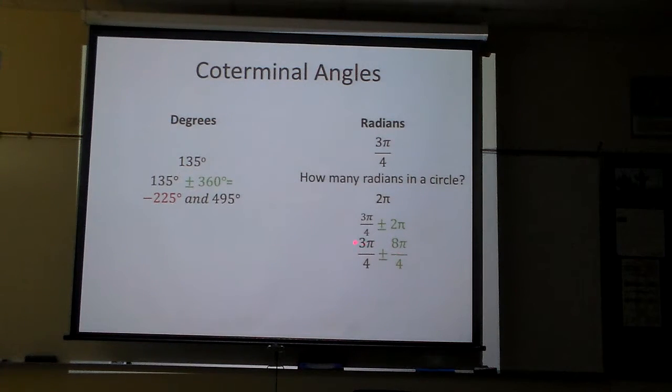Add 3 and 8 and take 3 minus 8. 3 minus 8 is negative 5π over 4. And 3 plus 8 is 11π over 4. So there's our same answer.